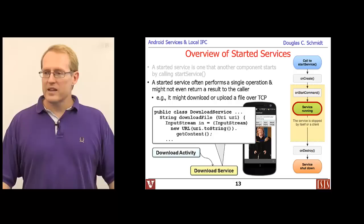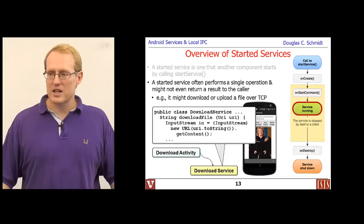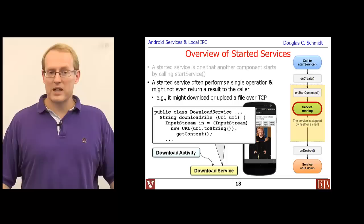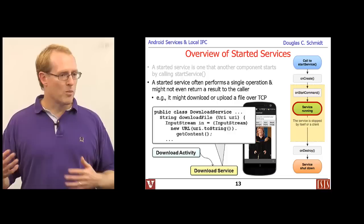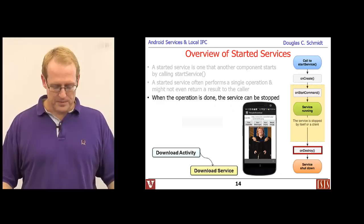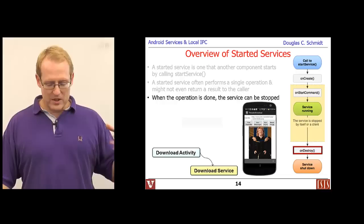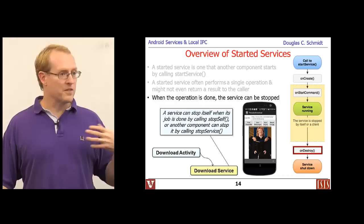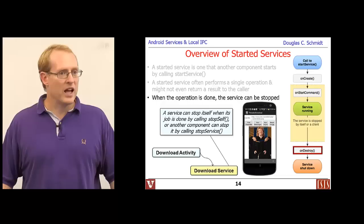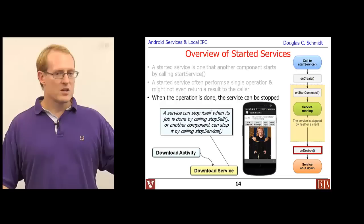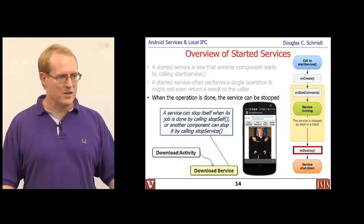There's no necessary reason that a started or bound service will run in a separate thread of control from the caller, but it's not uncommon. It's also not uncommon to run the service in a separate process. When the operation is done, the service can be stopped — either by calling stopSelf(), stopping itself, or having another client call stopService(). For one-shot services, they typically stop themselves when done, and then the resources are reclaimed.